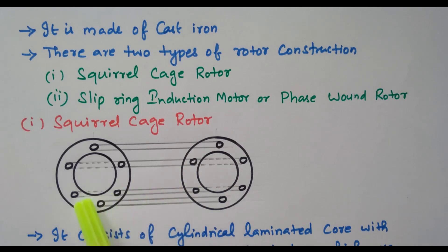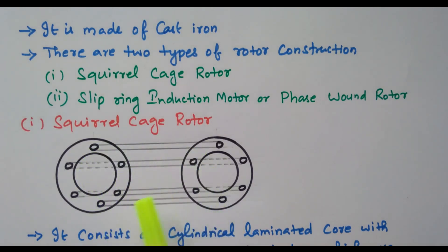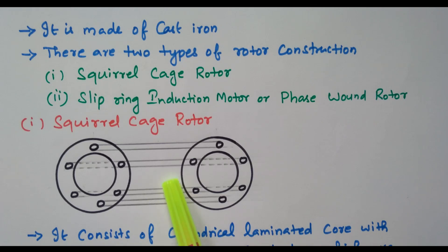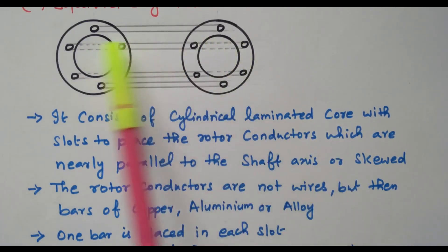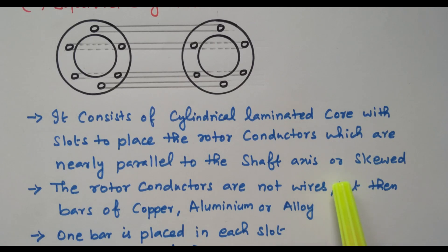Now we will see the squirrel cage rotor. This rotor has copper bars permanently placed in the slots — these copper bars act as the rotor winding or rotor conductors. The construction consists of a cylindrical laminated core with slots to place the rotor conductors, which are nearly parallel to the shaft axis or skewed. Skewed means they are slightly inclined — not a straight line. There are many advantages to placing the rotor conductors in a skewed manner.